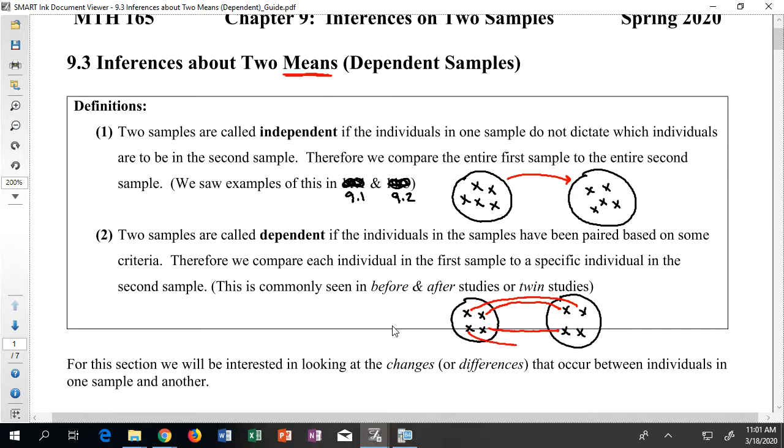In past sections, we dealt with this first case. We looked at credit card debts for households in New York and Texas. We looked at the percentage of males that complete their degree versus females, and we weren't interested in comparing one male to one female like pairing them up. We were interested in comparing a whole group to another whole group. But you can imagine instances where I might be interested in comparing person to person.